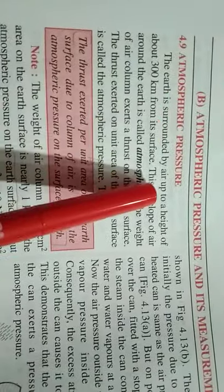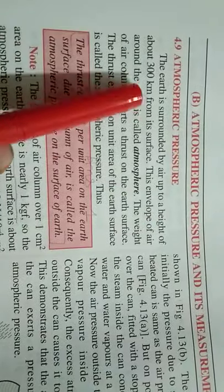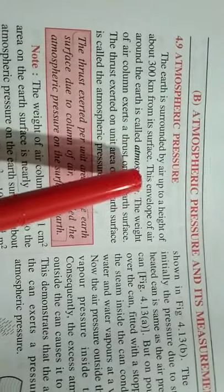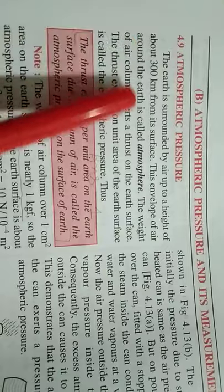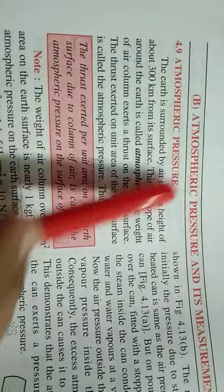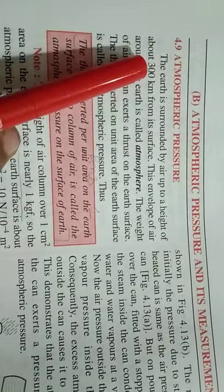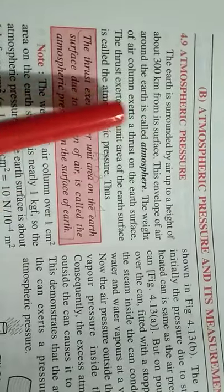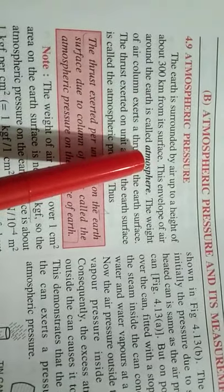So atmospheric pressure. The earth is surrounded by air up to a height of about 300 kilometers from its surface. This envelope of air around the earth is called atmosphere.